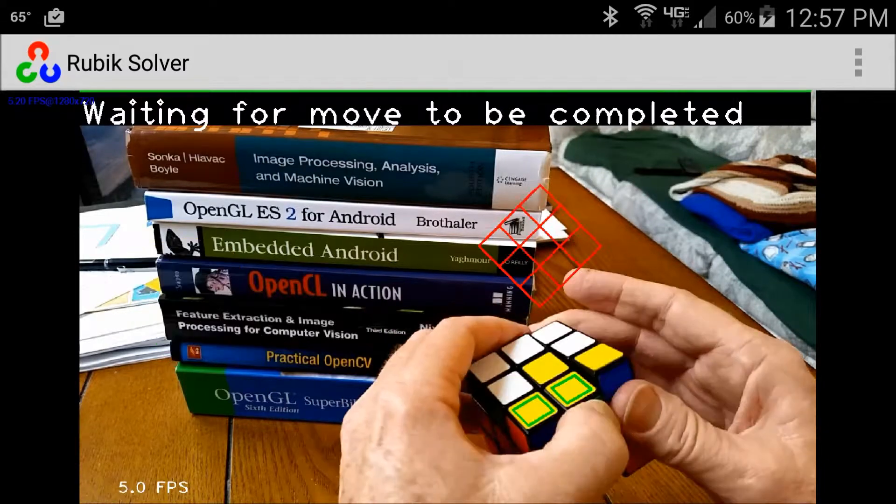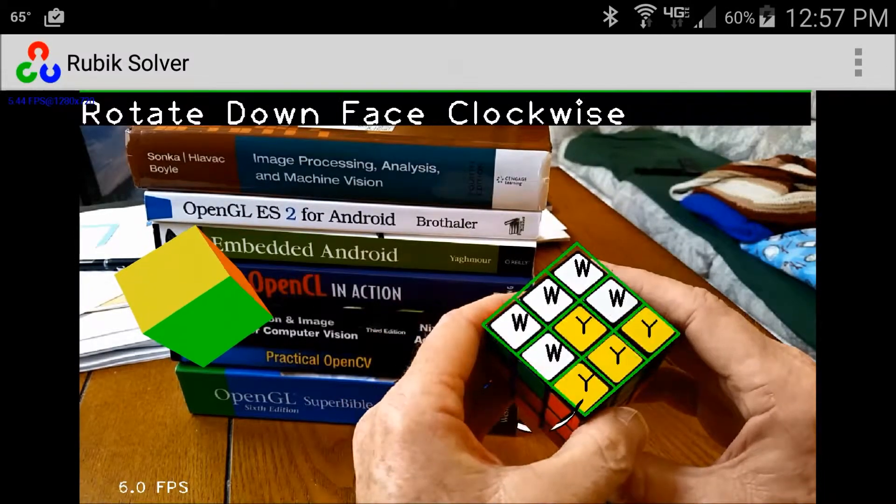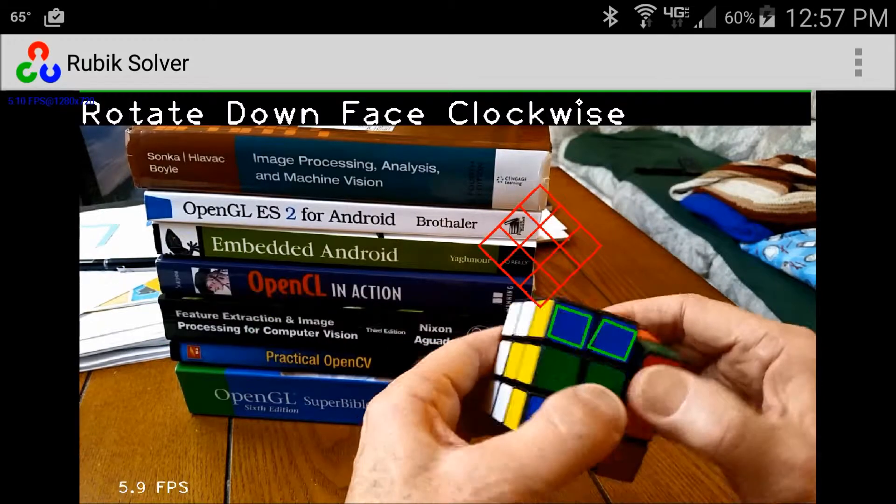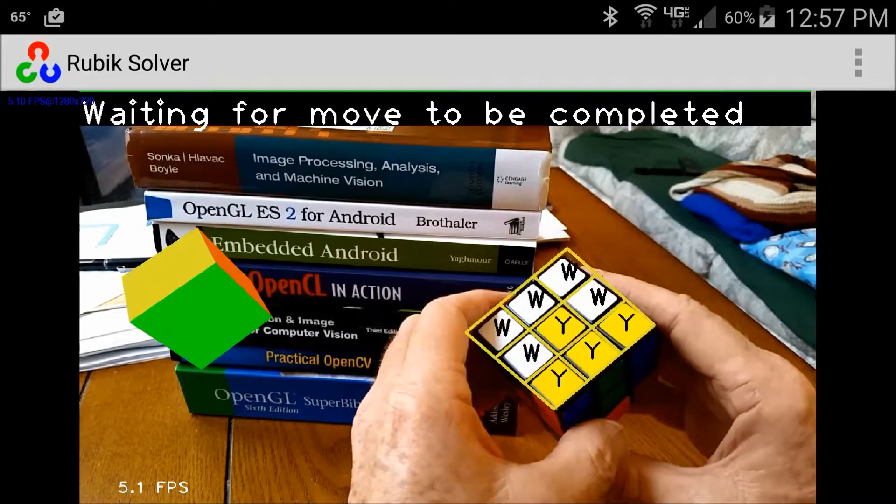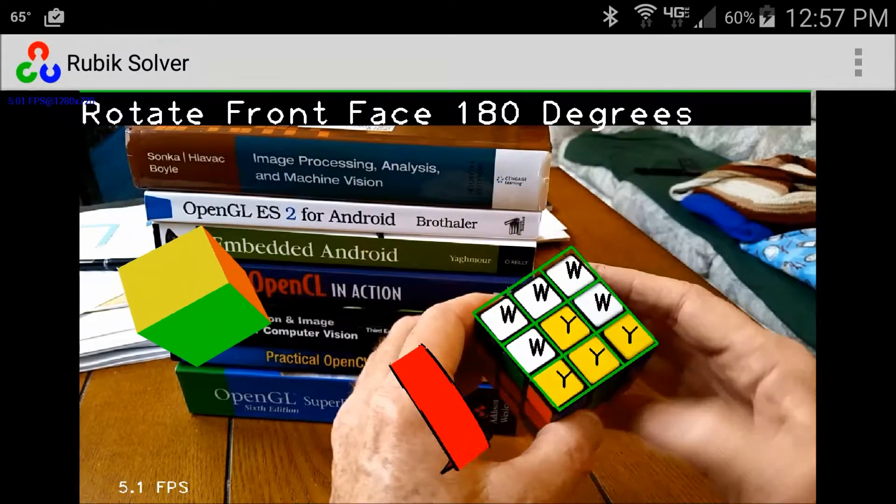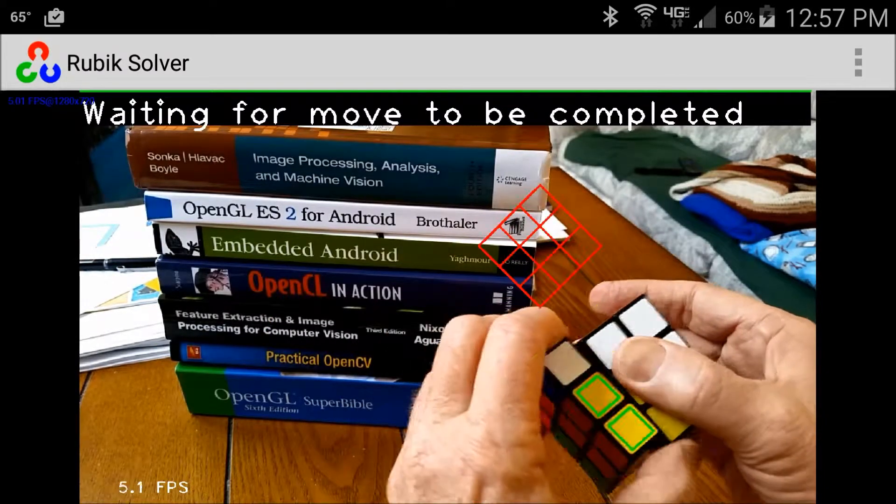uses three significant open source packages to achieve its objectives. They are OpenCV for the purpose of Image Edge Detection, Contour Detection, and Polygon Generation,